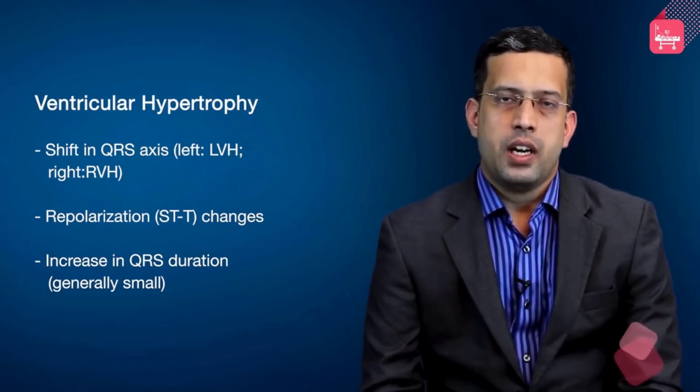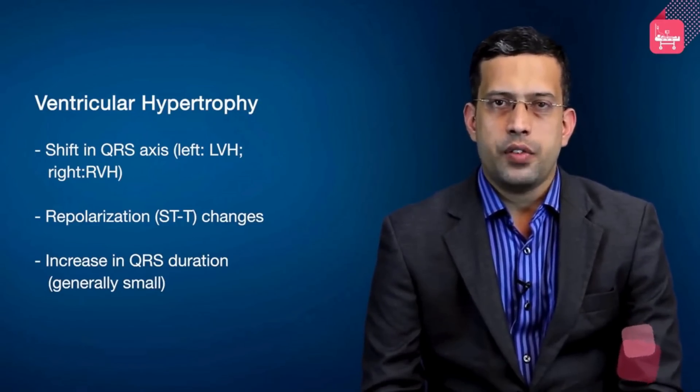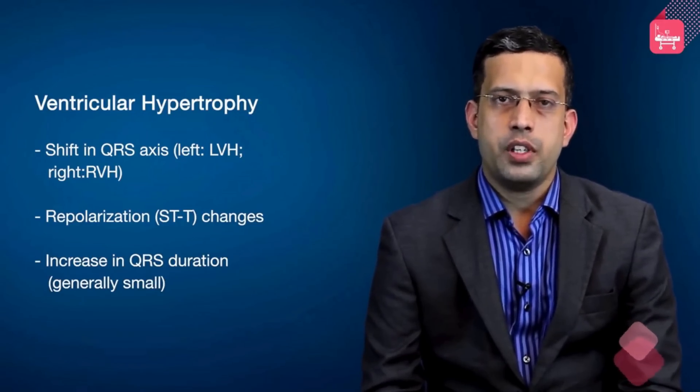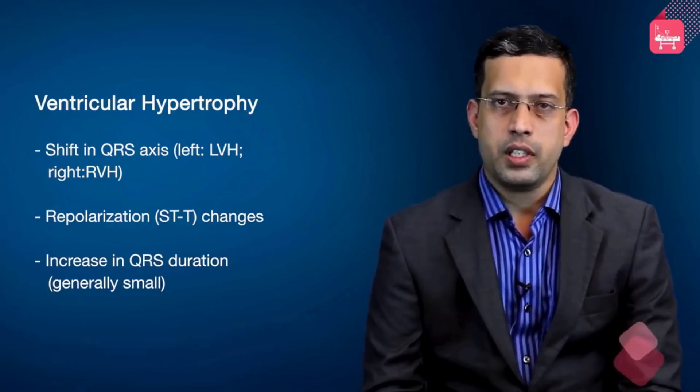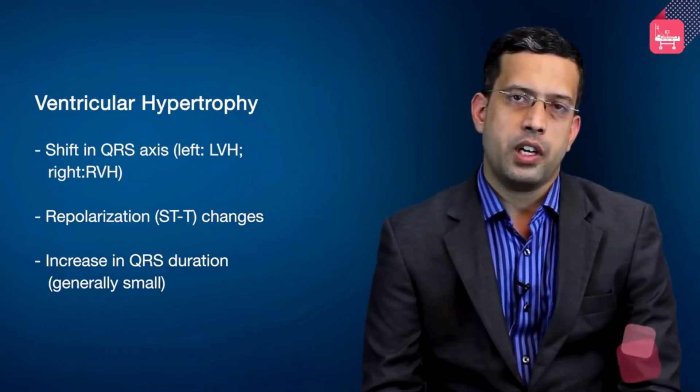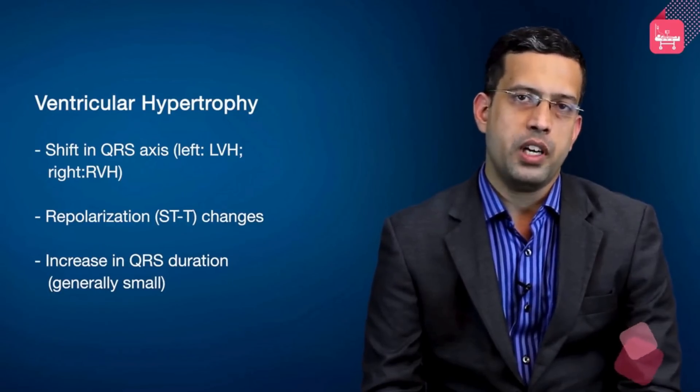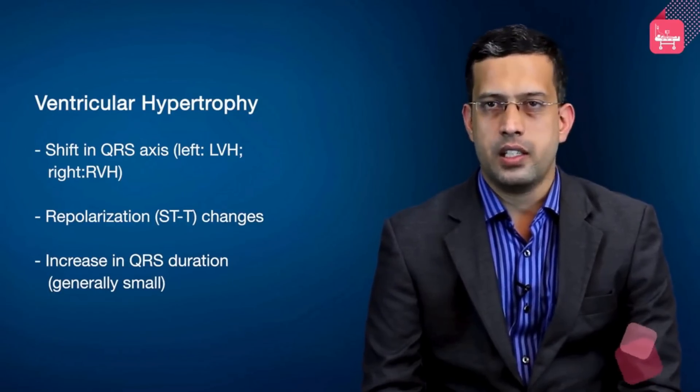With left ventricular hypertrophy, there would be a shift in axis to the left, and with right ventricular hypertrophy, there would be a right axis deviation.